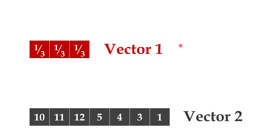First of all, suppose that we have two vectors, vector one and vector two, and we want to convolve these two vectors together. You might ask what is the meaning of the convolve operator. In order to understand that, we are going to study an example, and after that example you will find out the meaning of the convolve operator.